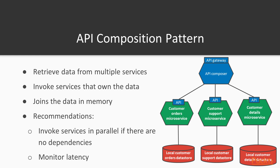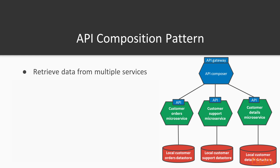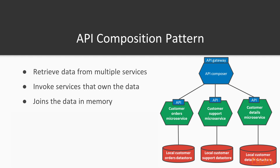The main idea of the API composition pattern is to retrieve data from multiple sources, effectively abstracting the implementation of more granular services for the client. The API composer makes requests to other services that hold the data — for example, to the customer order microservice, the customer support microservice, and the customer details microservice. It could be joining the data in memory and then returning that data to the original requester.